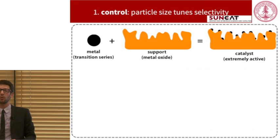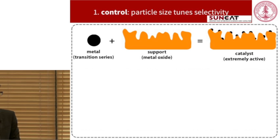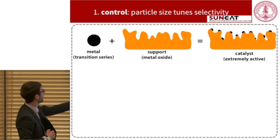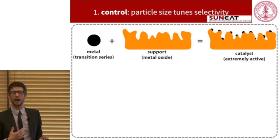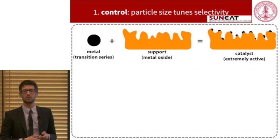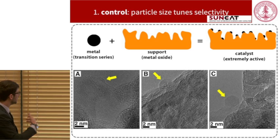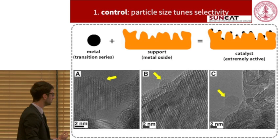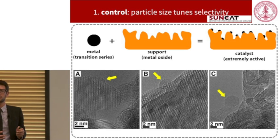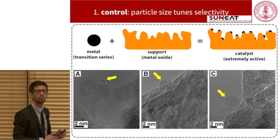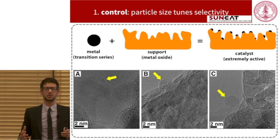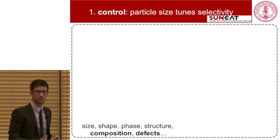Let me tell you what type of materials we are going to talk about today. These are supported systems. It means that we have a small metal particle, usually from the transition series, and a support which is high-specific-surface-area and highly porous. The combination of metal and the support — which is usually a metal oxide — gives rise to the catalyst, which we hope is extremely active. Here I reported three electron microscopy images of supported systems, where arrows point to the small metal particles surrounded by all the high-surface-area materials. You can have an idea of how complicated these things are, with all these different facets and atoms.